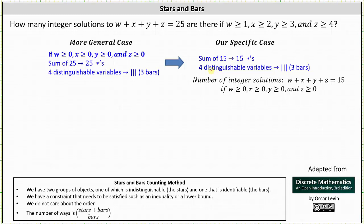Another approach would be to change the conditions for w, x, y, and z so that they're all greater than or equal to zero, and then find a different equation that would have the same number of integer solutions. What I mean by that is, if we subtract one from w, subtract two from x, subtract three from y, and subtract four from z, then all the variables would be greater than or equal to zero. But by performing the subtraction, we subtracted 10 from the variables, and therefore would also have to subtract 10 from 25 in the original equation. So this gives us the equation w plus x plus y plus z equals 15 if all the variables are greater than or equal to zero.